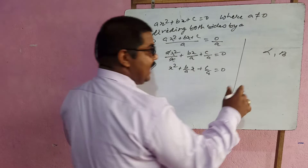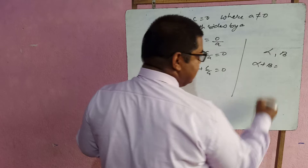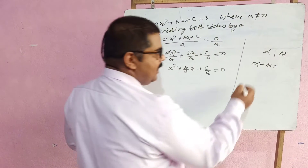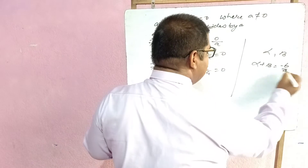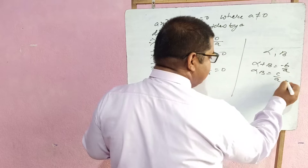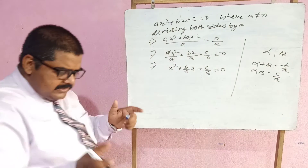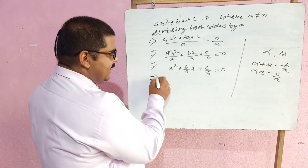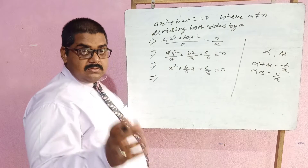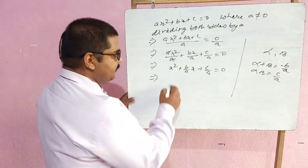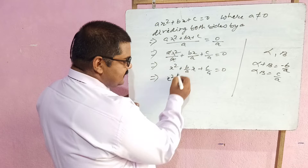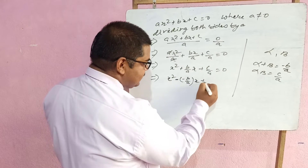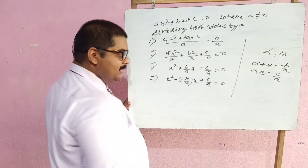In the last video I showed that alpha + beta = −B/A and alpha × beta = C/A. Now we need to adjust this equation. We can rewrite x² + (B/A)x + (C/A) = 0 as x² − (−B/A)x + (C/A) = 0.